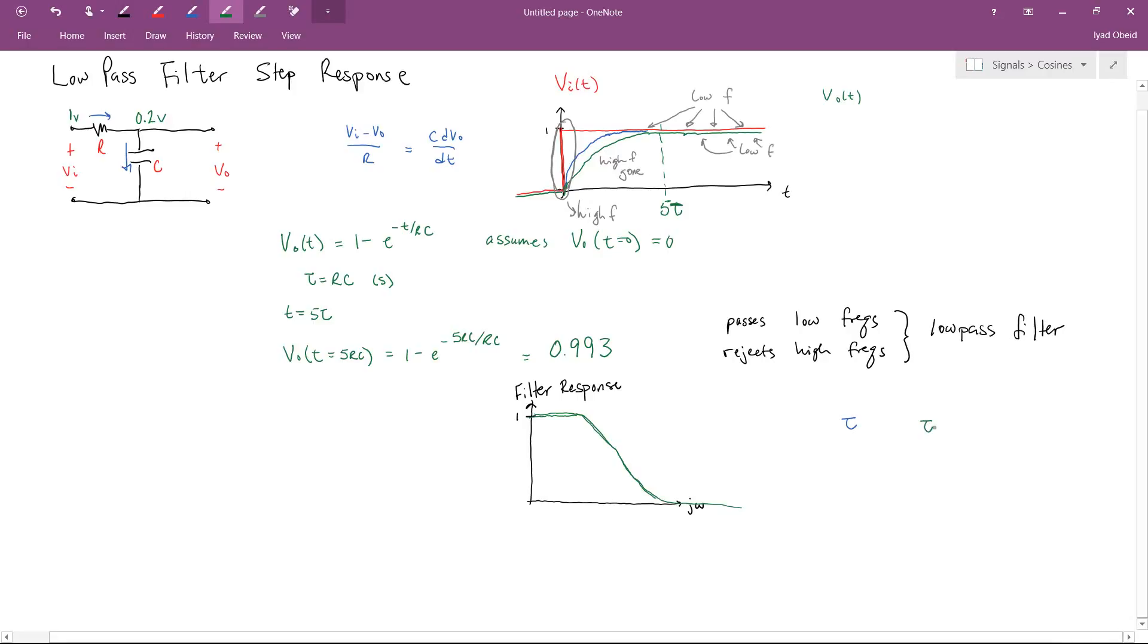Both of them have step response 1 minus e to the minus t over RC. The only difference is their time constants. Now I would argue that if it takes 5 time constants for the signal to charge up all the way and if the blue signal charges up faster, that would imply that its time constant is smaller.